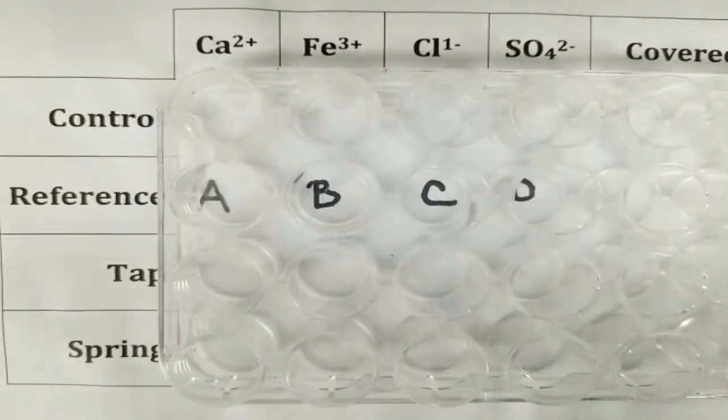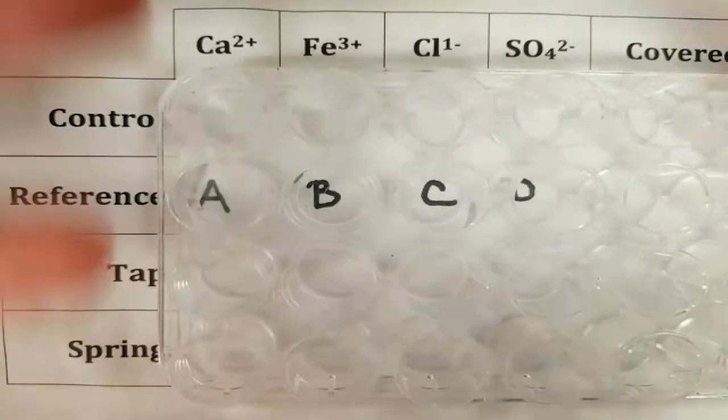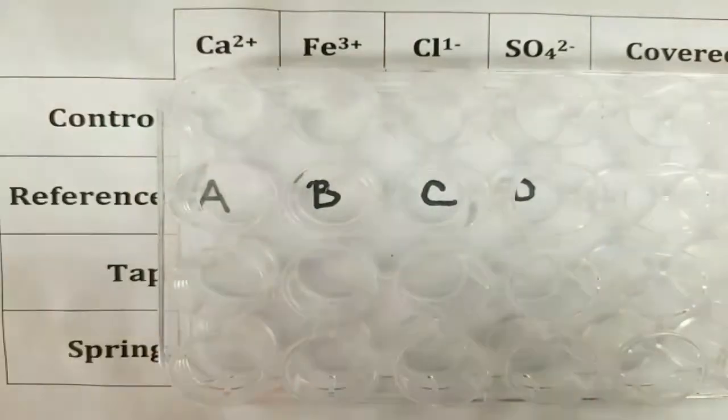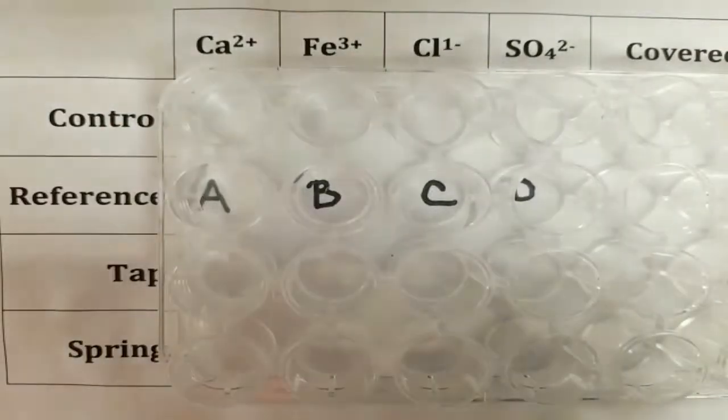All right class, today we are going to be doing the ion testing lab. And the first thing we need to do is we need to set up our tray. As you can see here, this is our well plate that we have here, and it is a paper backing which tells us where everything goes.